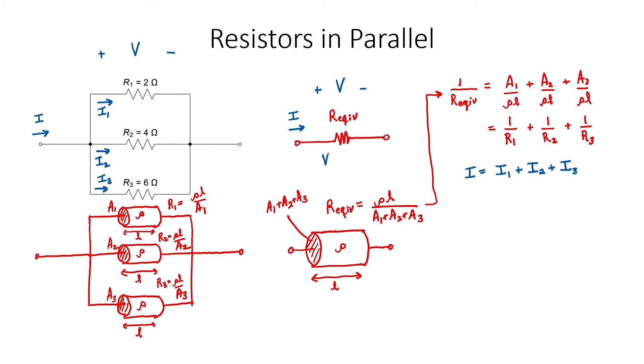Therefore, for I, we know that it's V divided by R equivalent. If we look at our original circuit, we know also that V equals I1R1. And a similar equation holds for the other resistors. From each of these three equations, we can substitute for I1, I2, and I3.